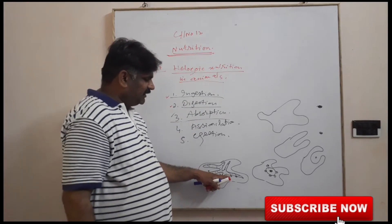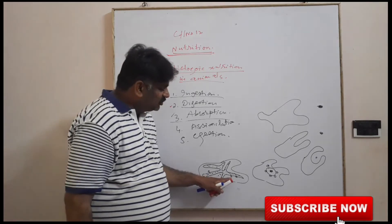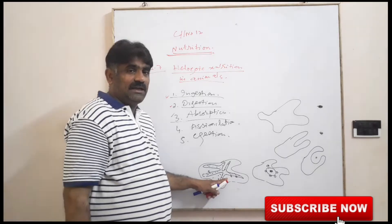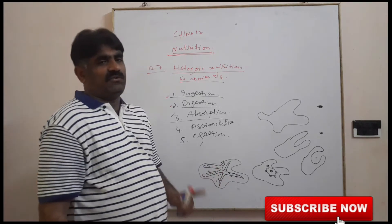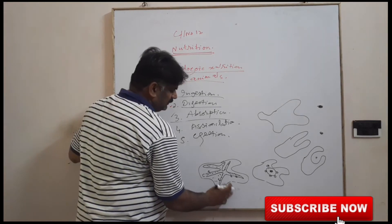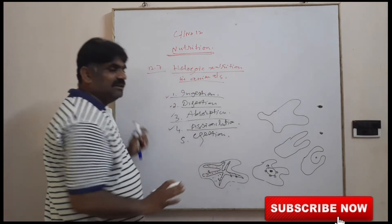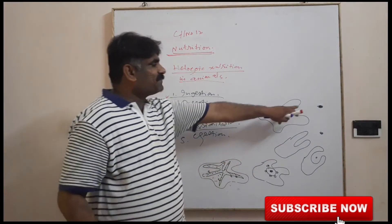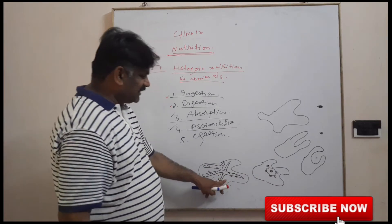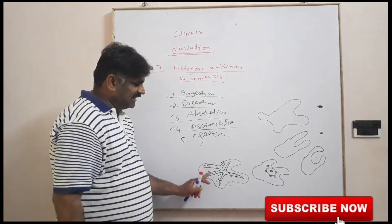This absorbed food completes the third step — absorption. Now this absorbed organic food, which is soluble, is used for building up the protoplasm of amoeba or for the purpose of energy. This is called assimilation — meaning utilization. Whatever food the amoeba took in the first step, then digested, then absorbed, is finally utilized by this cell.